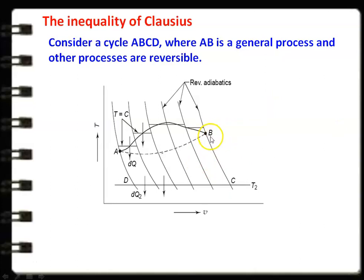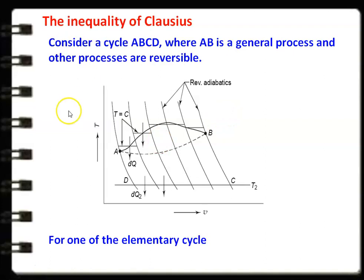The other processes — B-C, C-D, and D-A — are reversible processes. B-C is the reversible adiabatic process, C-D is the reversible isothermal process, and D-A is the reversible adiabatic process. We draw a number of parallel reversible adiabatic lines and the entire cycle A-B-C-D is divided into a number of cycles — for example, 5 cycles. This curved path is replaced by an equivalent straight isothermal line, forming the first elementary cycle, giving 5 elementary cycles in total.